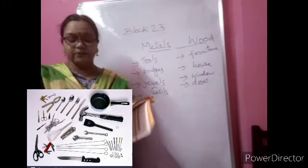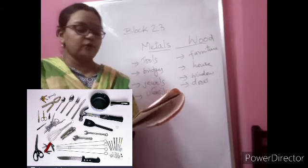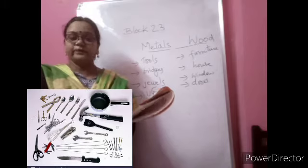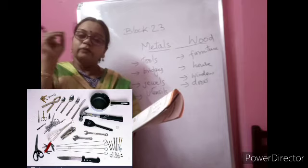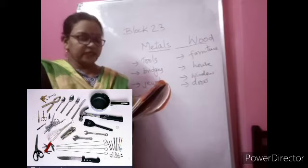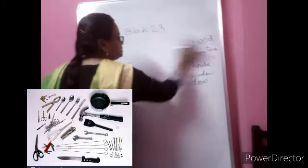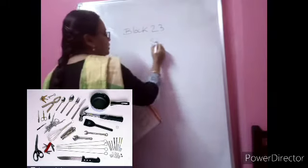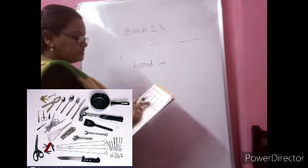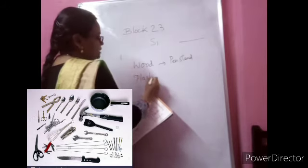Now let us move on to the workbook. Take workbook page number 35 — Materials Around Us. Many pictures are given: toy, knife, glasses, pot, bucket, bottle, pen stand, scarf, glass bowls, and dress. You have to name the different materials and find out which object is made up of what type of material. For cloth, they wrote scarf and dress. Next you can write for wood — the pen stand is there.